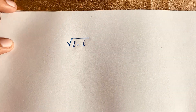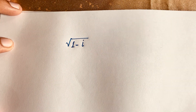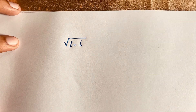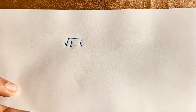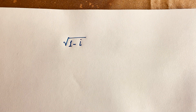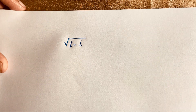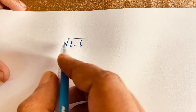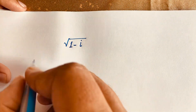How to solve this interesting math question: square root of (1 minus i) is equal to what? Let's start. Our question is the square root of (1 minus i).